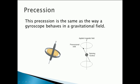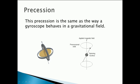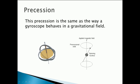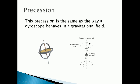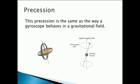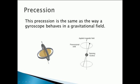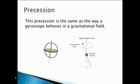Another thing that precesses are gyroscopes. Here's a picture of gravitational precession of a gyroscope. The gravitational field lines point vertically downwards, and the spinning gyroscope precesses around them because it's not perfectly aligned. This is a large-scale gravitational analogy of what's happening to the spinning nuclei in your body when they're aligned in the magnetic field — precession.